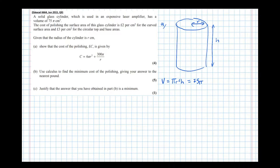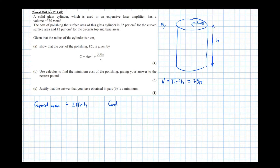Let's look at the curved surface area first. The curved area equals height times the circumference — when the shape is unfolded it forms a rectangle whose width is the circumference 2πr. So curved area = 2πrh. The cost of polishing that at £2 per cm² is 2 × 2πrh = 4πrh.